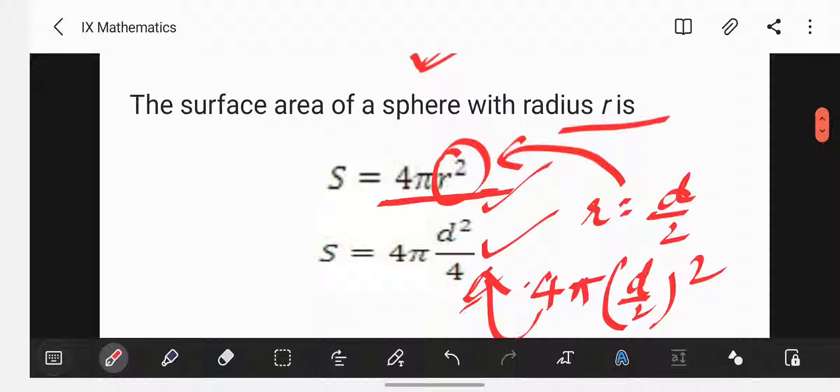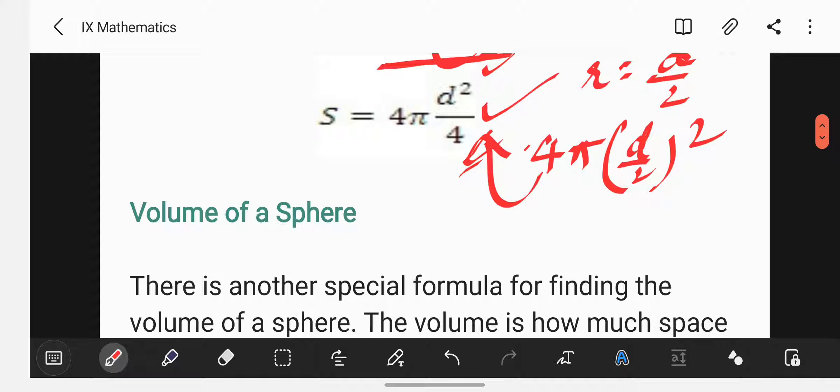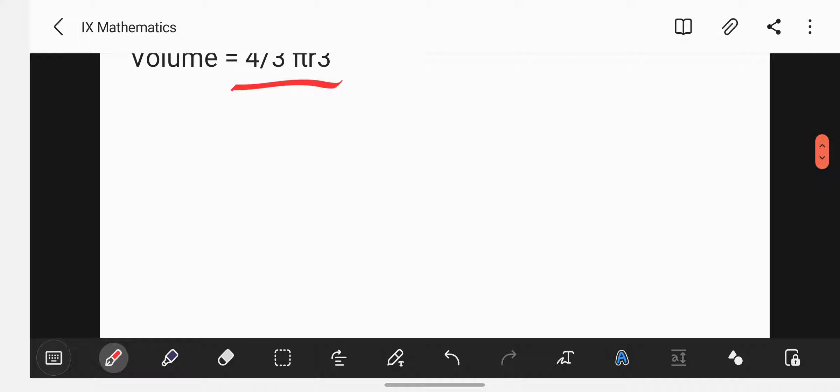The answer to the volume question is always in cubic units. And for surface area, it is always in square units. The surface area is in square units and for volume, it is cubic units. Volume is given by 4/3 πr³.